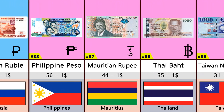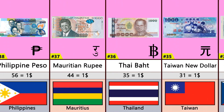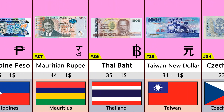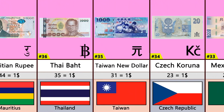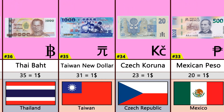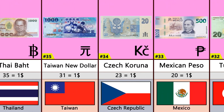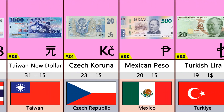Number 35: Taiwan New Dollar. Number 34: Czech Koruna. Number 33: Mexican Peso. Number 32: Turkish Lira.